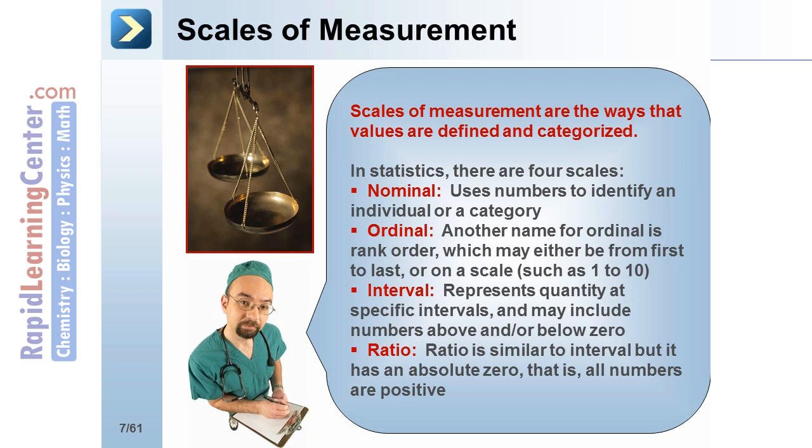Interval: this scale represents quantity at specific intervals and may include numbers above and or below zero. For example, temperature is measured on an interval scale. And ratio: ratio is similar to interval but it has an absolute zero, that is, all numbers are positive.